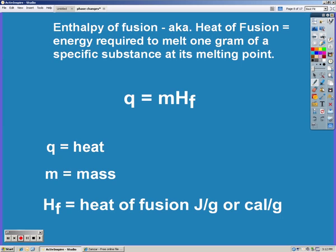If a substance is melting, then that's going to be the enthalpy of fusion or the heat of fusion. It's the energy required to melt one gram of a specific substance at its melting point. So q is heat, m is mass, and Hf is the heat of fusion, and it's usually in joules per gram or calories per gram.